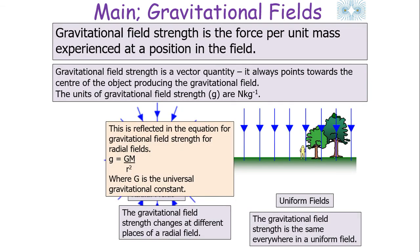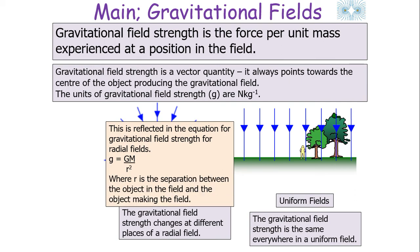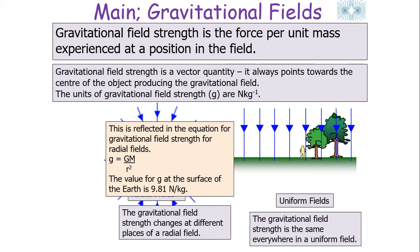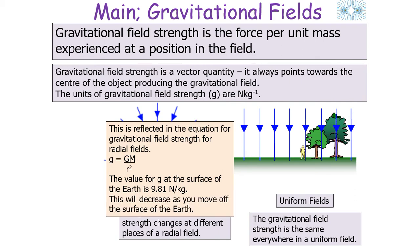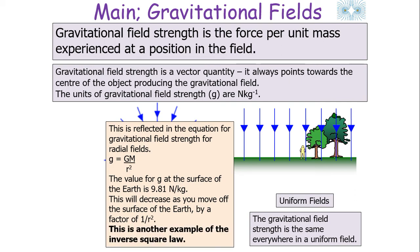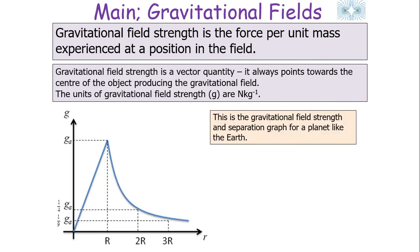Big G is the universal gravitational constant, big M is the mass of the object creating the field, and R is the separation between the two objects. The value of g at the surface of the Earth is approximately 9.81 N/kg, but this decreases as you move off the surface as R gets bigger. It decreases by a factor of R squared — or increases by a factor of 1/R² — making it an example of the inverse square law.